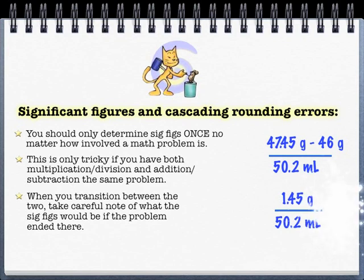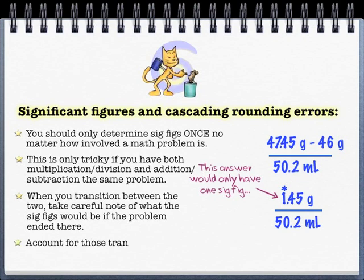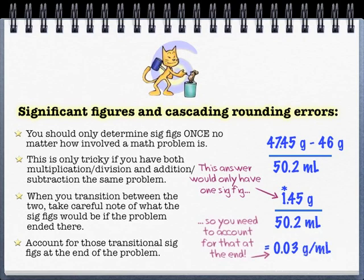When I subtract those top two numbers, I would actually only have one sig fig left based on sig fig rules. I don't round at that point. I say, let's put that in the back of my head and keep going. Then I have a division problem, and now it's one sig fig and three sig figs, so my answer could only have one sig fig, 0.03.